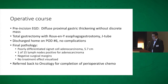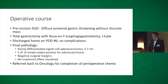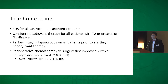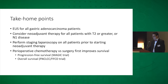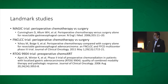He's been referred back to medical oncology to complete treatment — it's not just neoadjuvant therapy before surgery; you have to complete three more cycles of chemotherapy after surgery to adhere to the way the trials were constructed. The take-home points: endoscopic ultrasound for all gastric adenocarcinoma patients; consider neoadjuvant therapy for patients with T2 or greater disease or N1 disease; consider staging laparoscopy for all patients going to start neoadjuvant therapy; and perioperative chemotherapy versus surgery alone improves a number of survival parameters. If you're interested in the landmark trials, the slides are being provided and you're welcome to email me for the PDFs.